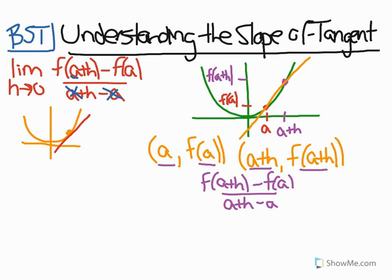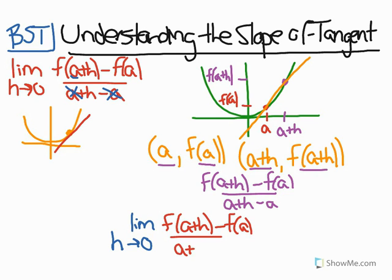But I don't want the slope of a secant line. I want the slope of a tangent. So in order to do that, what I'm going to do is take this and make it the limit as h approaches 0 of f at a plus h minus f at a over a plus h minus a.